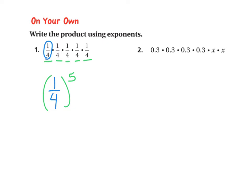Now let's look at number 2. Again, we have two different types of bases here — we have the 0.3 as a base, and we have x as a base. So we're going to have 0.3, and then we're going to have x. How many 0.3s do we have? We have 4 of them. So I'm going to put this in parentheses and say 4. And then x — we have 2 of them. Variables you don't need to ever put in parentheses. So there are your two final answers.